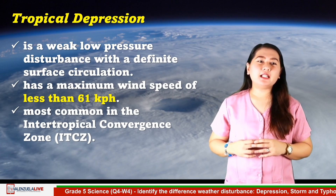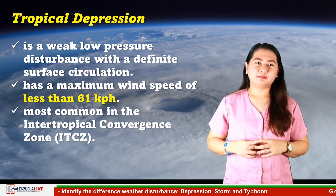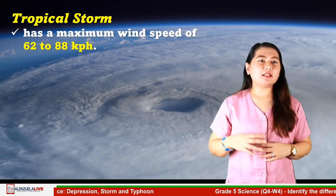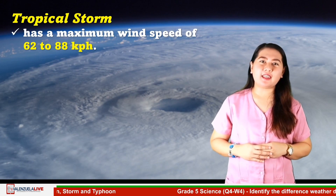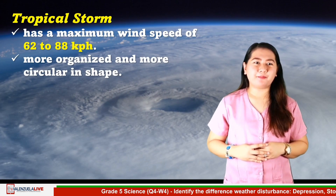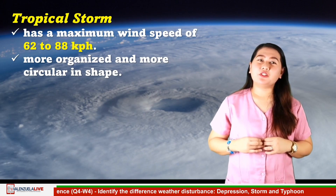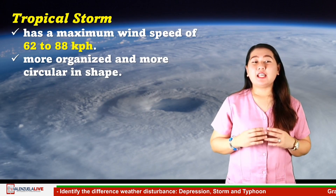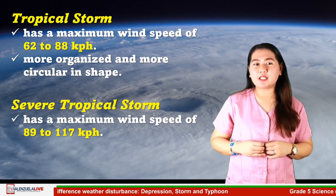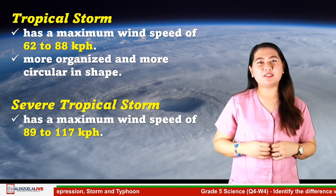The ITCZ is the belt of low pressure which circles the Earth generally near the equator. Once the tropical depression has intensified, it becomes a tropical storm. A tropical storm has a maximum wind speed of 62 to 88 kilometers per hour. It is more organized and more circular in shape. The rotation of a tropical storm is more recognizable than that of a tropical depression. A tropical cyclone with maximum wind speed of 89 to 117 kilometers per hour is said to be a severe tropical storm.